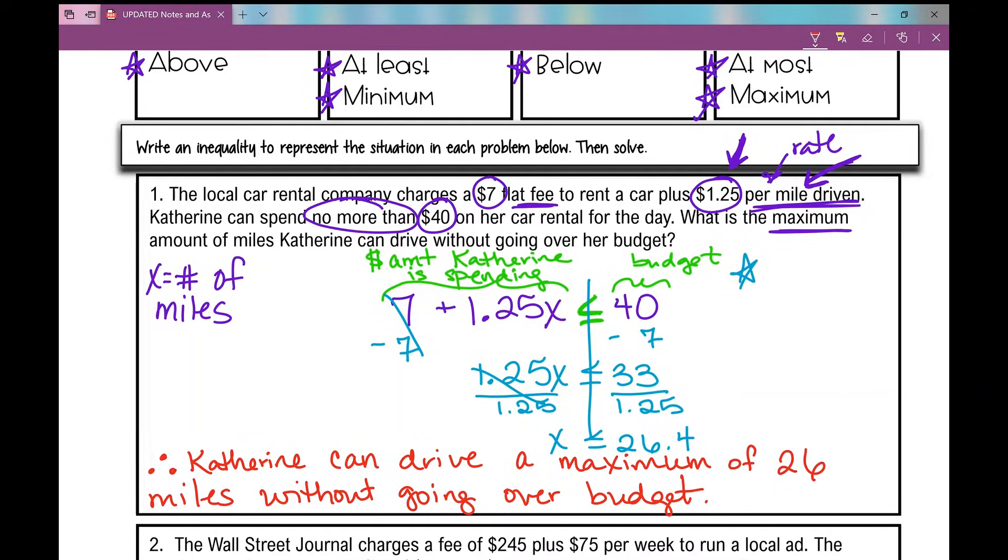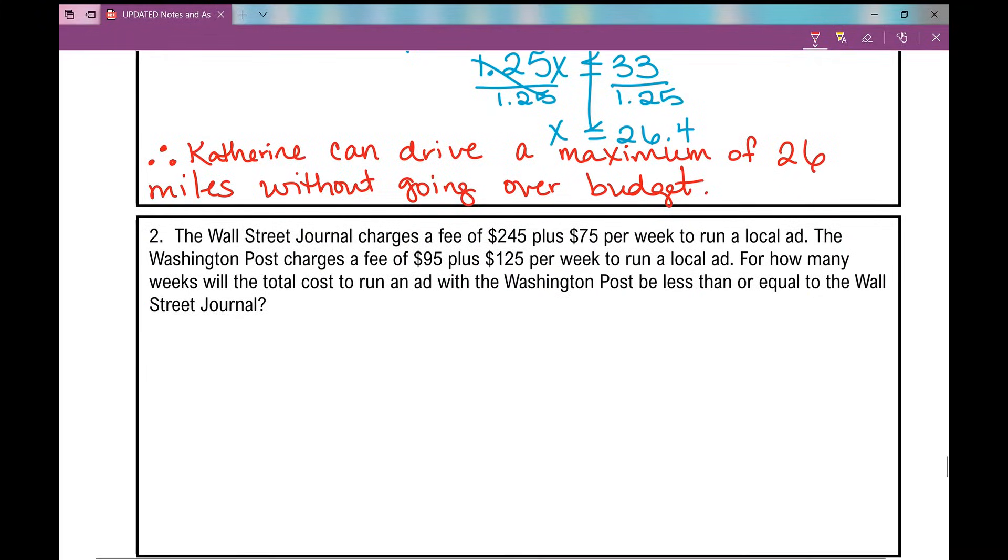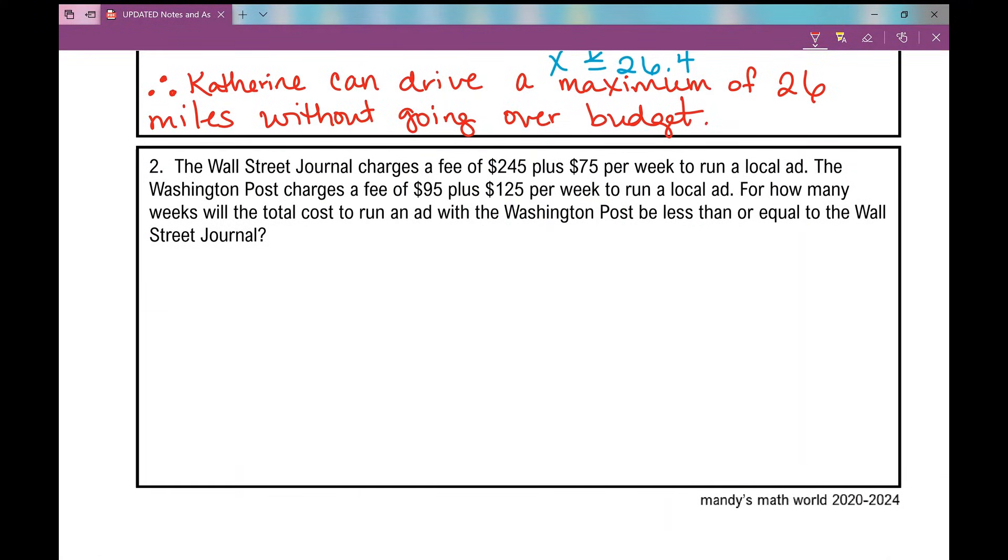Let's move on to number two. The Wall Street Journal charges a fee of $245 plus $75 per week. There's your rate, right?